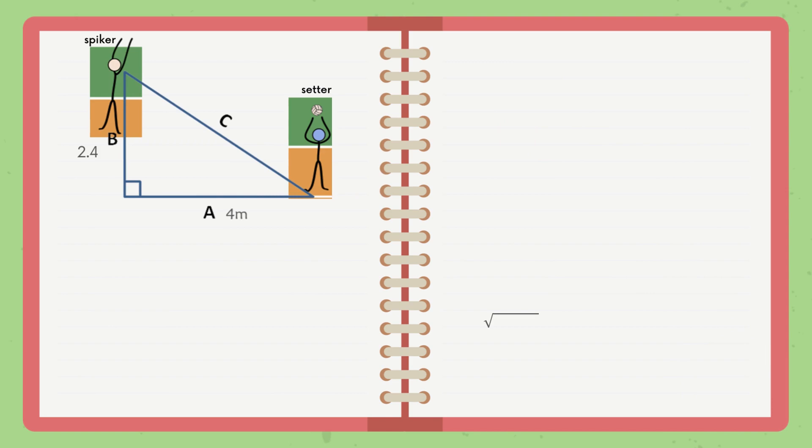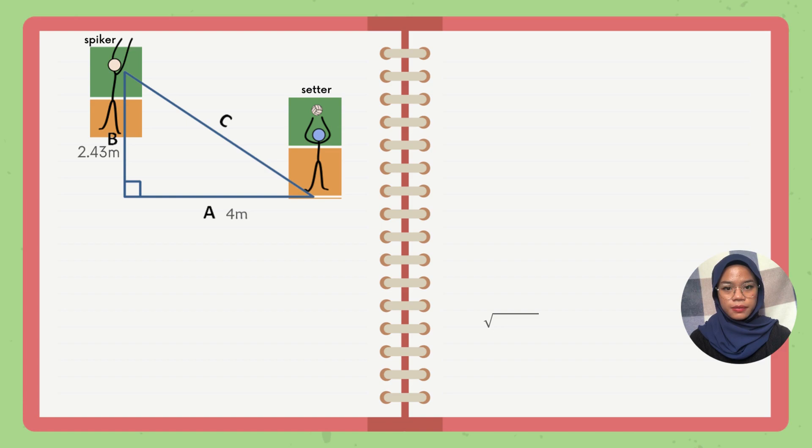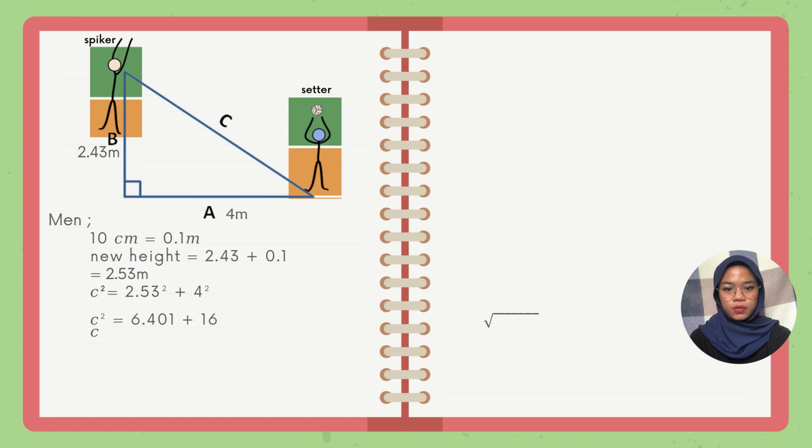We know that the spike must jump 10cm higher than the net. Our first step is to convert the unit to meters: 10cm equals 0.1m. Now let's find the new jump height for both women and men. For men, the new height is 2.43m plus 0.1m, which equals 2.53m.